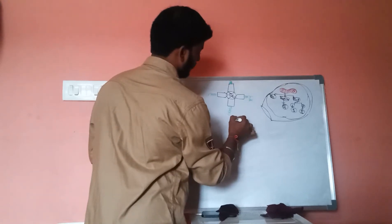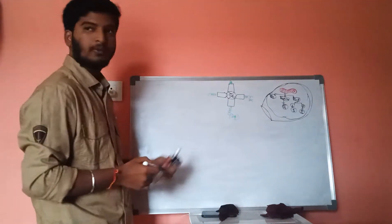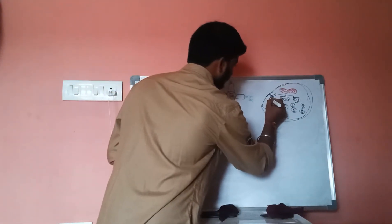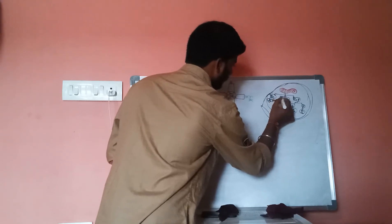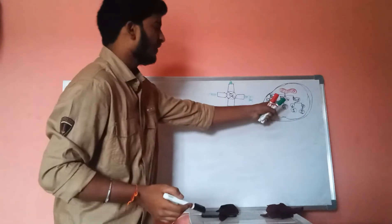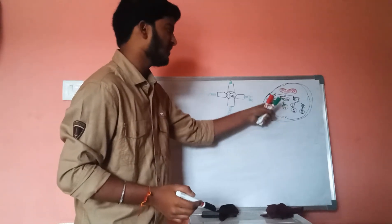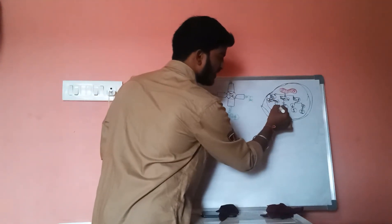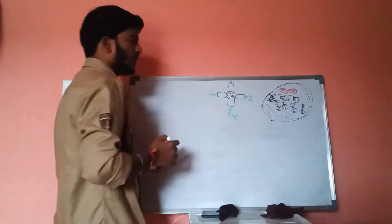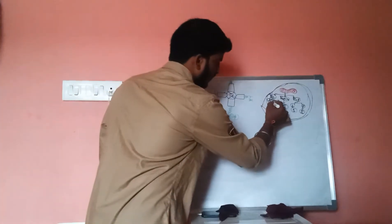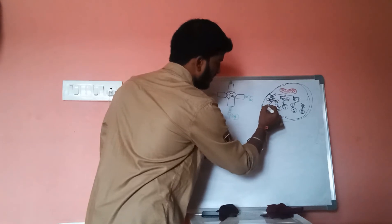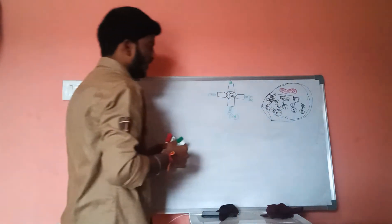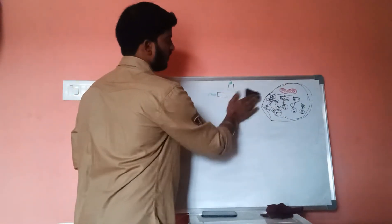As we know, hemoglobin consists of four tetramers — two alpha chains and two beta chains. Whenever it is ruptured, the heme molecule and globin chain are separated. The globin chain gets detached and is digested, resulting in formation of amino acids. The leftover parts are the heme and iron molecule.